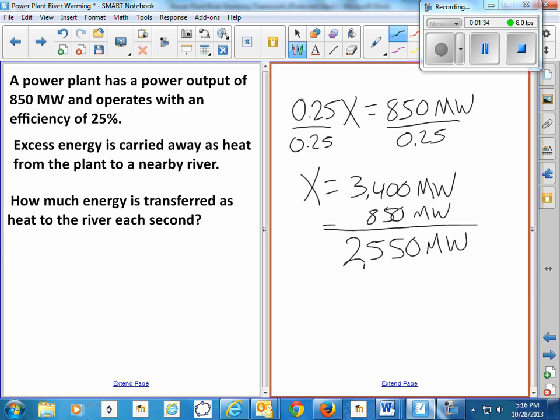A megawatt is—well, a watt is a joule per second and mega means 10 to the sixth. It's 6 more zeros. So it's 2.5 billion joules of heat. Uh-oh, are we going to warm up our river?